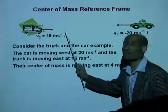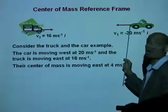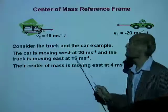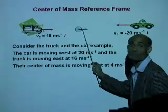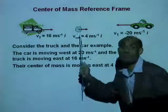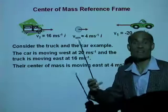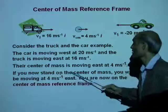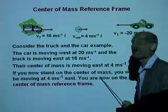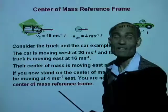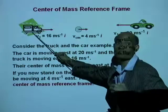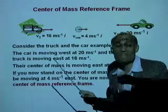If you don't remember, you can calculate that. The velocity of the center of mass is M1V1 plus M2V2 divided by M1 plus M2. Its center of mass is moving east at 4 meters per second. We are now going to observe from the center of mass - use the center of mass as the reference frame. So if you stand on the center of mass, you will be moving at 4 meters per second east. You are now in the center of mass reference frame, and you will measure the velocities of the truck and car from there.